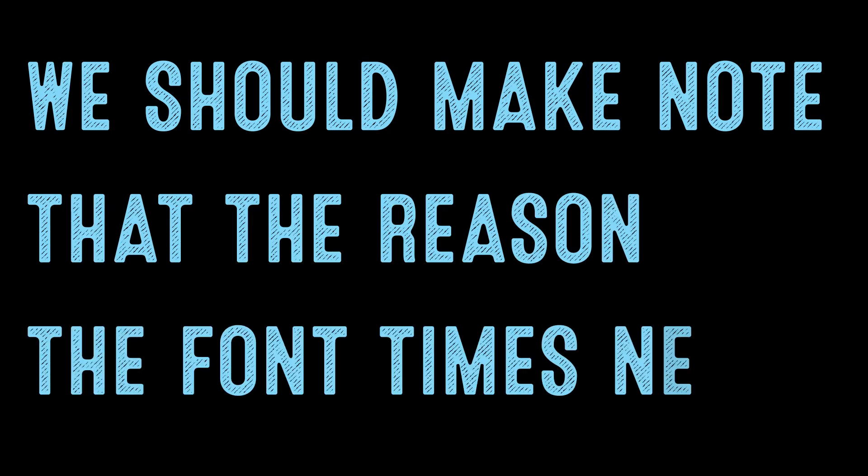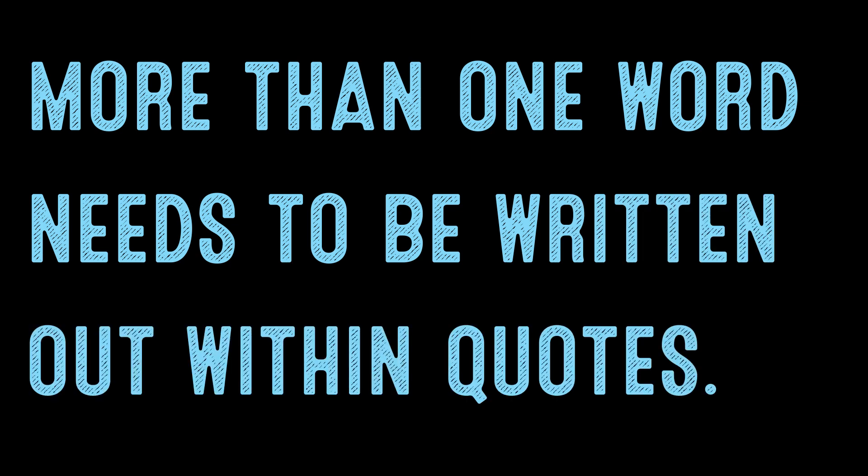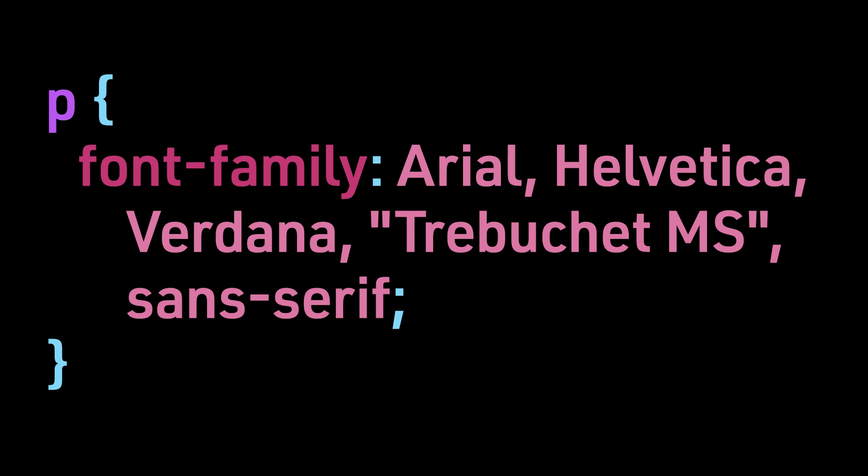In this example, paragraph text will be displayed in Georgia. If that is unavailable, the text will display in Times New Roman. And finally, if that is not available, it will choose any serif font on the system. We should note that the reason Times New Roman appears in quotes is because any font name with more than one word needs to be written within quotes. Here is another example: p { font-family: Arial, Helvetica, Verdana, 'Trebuchet MS', sans-serif; }